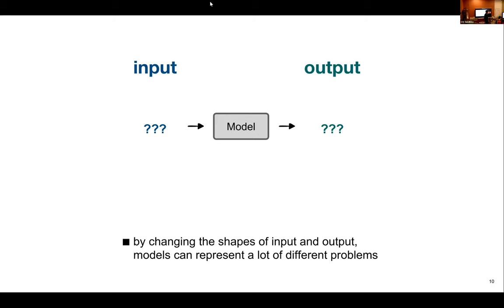By changing the shapes of inputs and outputs, we can use these linear algebra algorithms to represent many different problems. The key principle is input → model → output, where the model is not explicitly coded to do anything. It isn't told 'if this is a rabbit, multiply by five' — it learns what to do. This idea is the bigger concept behind the field of AI and machine learning.